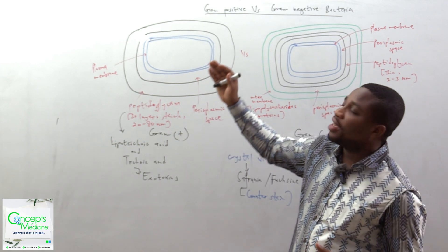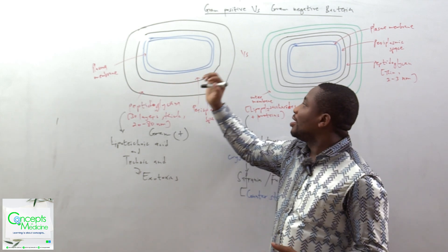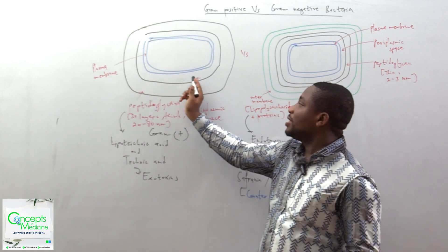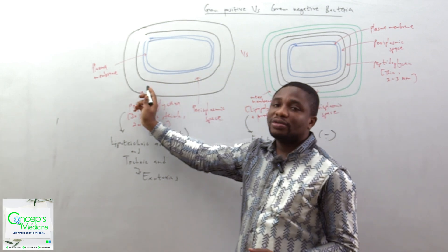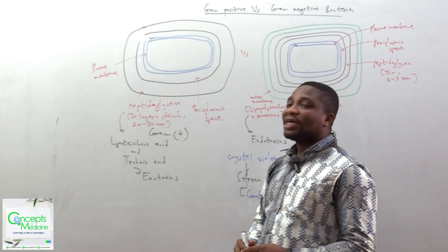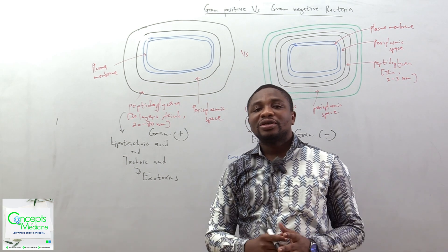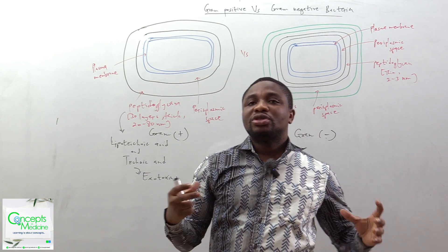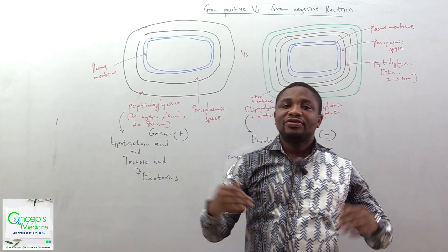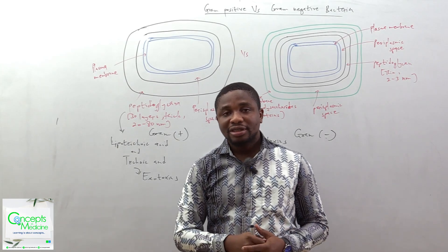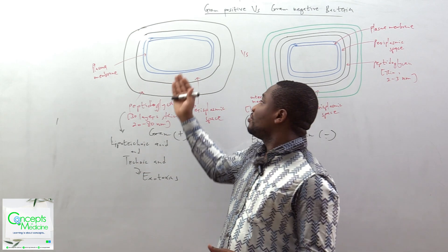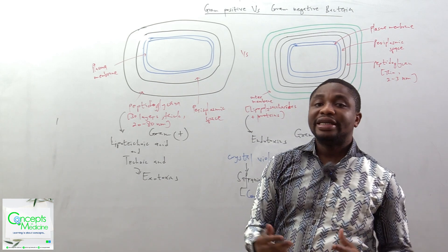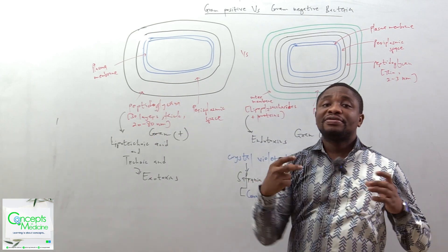For the gram-positive bacteria, look at the structure of the wall. On the inside, you have the plasma membrane, followed by a space we call the periplasmic space, then followed by the peptidoglycan. The peptidoglycan is what gives strength to the bacteria wall, meaning that it absorbs all stress coming from the external or internal environment. The gram-positive bacteria has about 30 layers of peptidoglycan in this wall, meaning that the peptidoglycan layer is very thick.